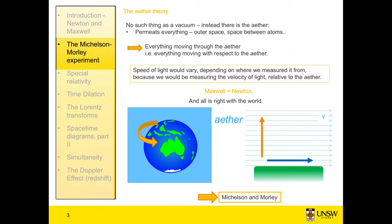What they successfully did was to measure the speed of light in two directions: perpendicular and parallel to the aether. Over the next few slides we'll look at what that tells us.